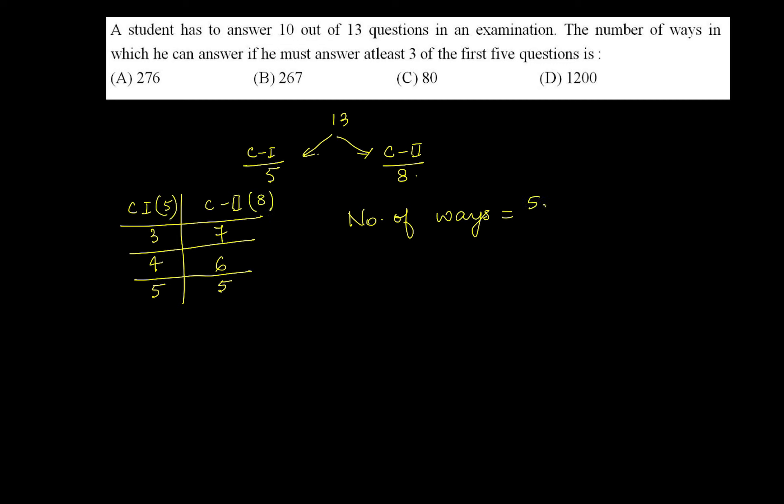So the answer is 5C3 into 8C7 plus 5C4 into 8C6 plus 5C5 into 8C5.